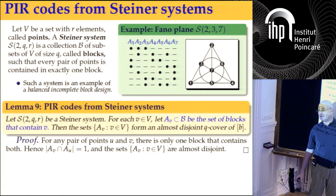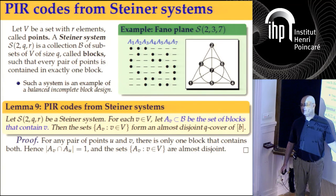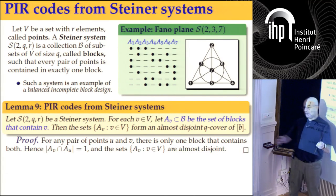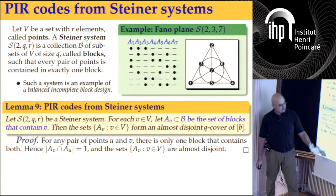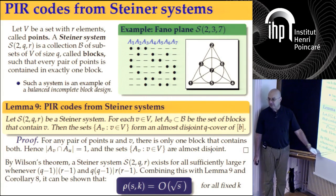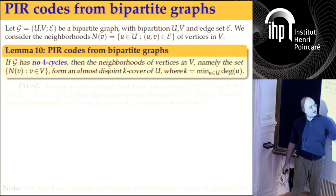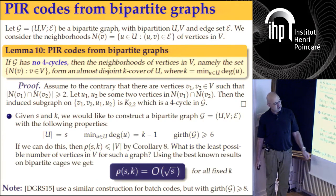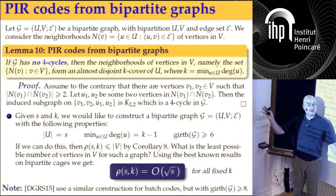We use the blocks of a Steiner system as our almost-disjoint K-cover. By Wilson's theorem, we get that the redundancy — and therefore the rate of the PIR code — goes to one. That is optimal. We also have more constructions from bipartite graphs giving the same result.